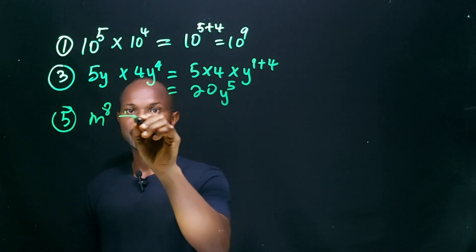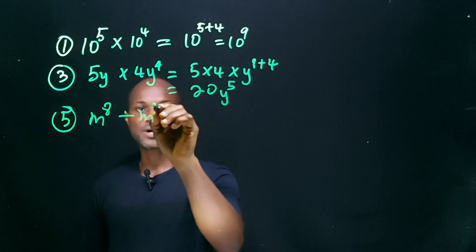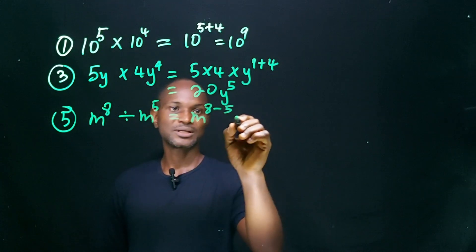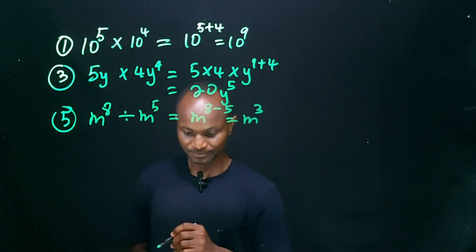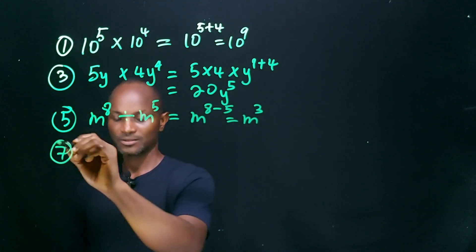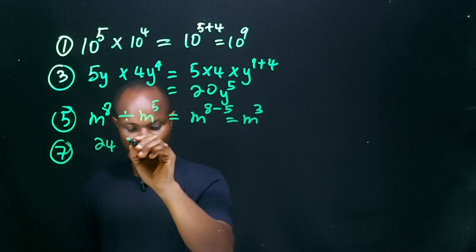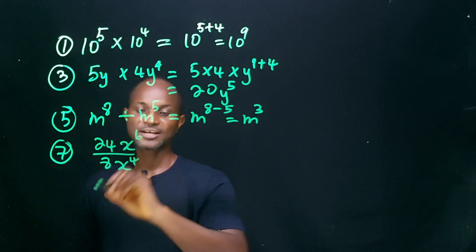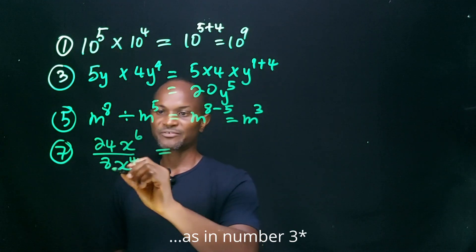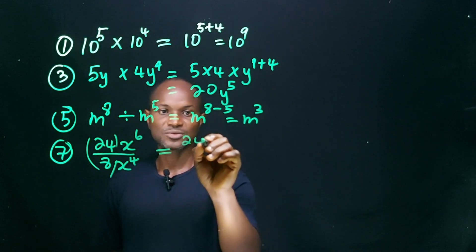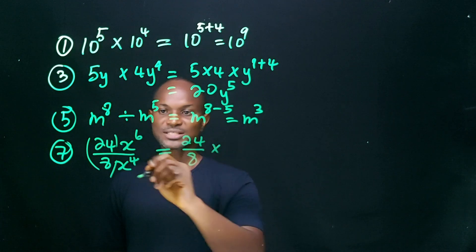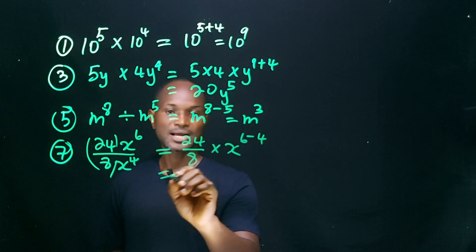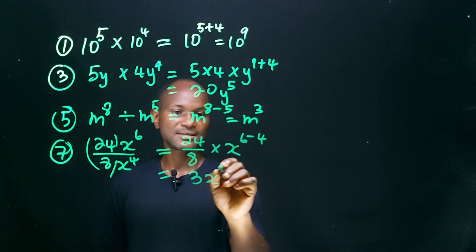Number 5: M raised to power 8 divided by M raised to power 5. Because of the division, we have M raised to power 8 minus 5, and this gives us M cubed. Number 7: 24x raised to power 6 divided by 8x raised to power 4. We deal with the coefficients first: 24 divided by 8, multiplied by x raised to power 6 minus 4. This gives us 3x squared.